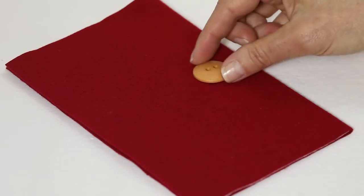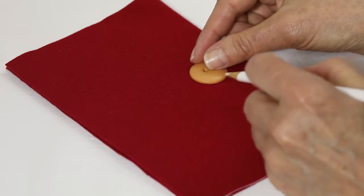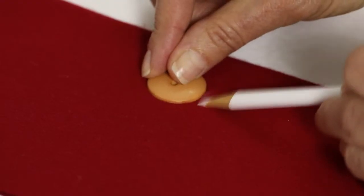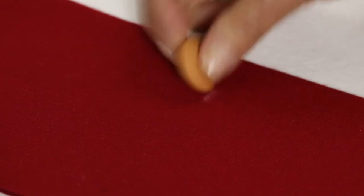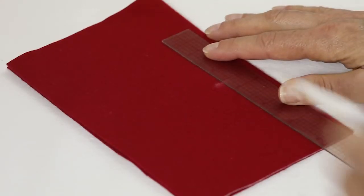Lay your button on the fabric and use a removable fabric marking pen or pencil to mark the bottom of your buttonhole. Then take a ruler to mark the center area of your buttonhole.